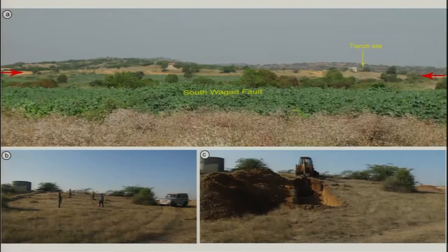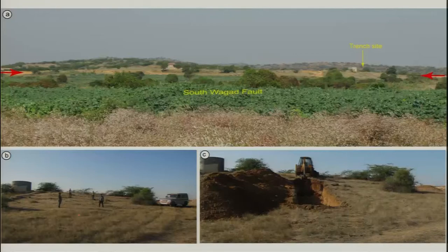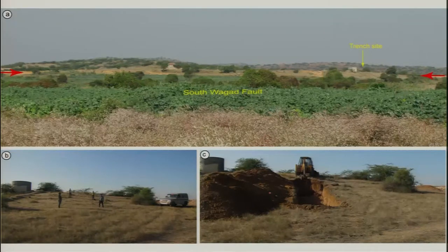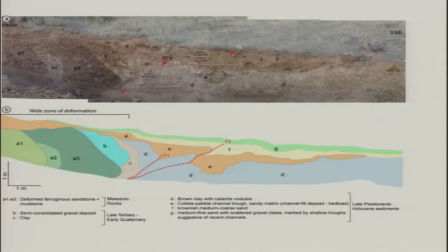We identified ancient earthquake signatures preserved in the stratigraphy — that is known as stratigraphy. We opened up the trench in an area marked and selected based on our experience, where we believed the fault was located. A pit was opened using a JCB backhoe to look at the section, because this gives us the deformation pattern. We were very confident the fault was running somewhere here, and this was the trench we opened and the stratigraphy we studied.